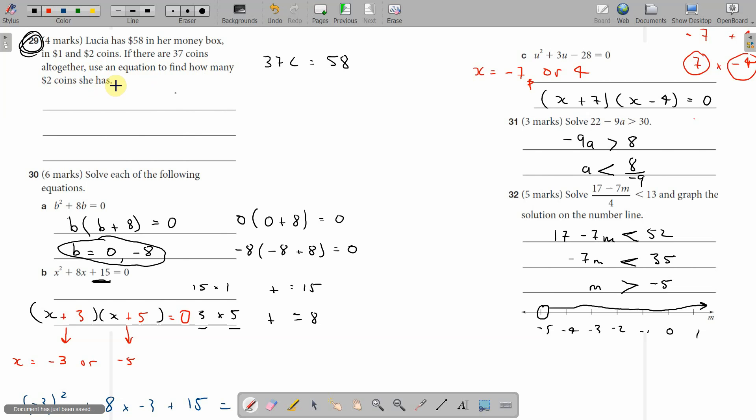The way I did it was using more than one equation. What I knew was that 37 represents the number of coins, which equals $58 total. Then I figured out how to tie in the $1 and $2 coin idea.